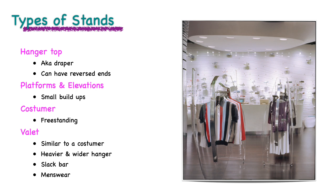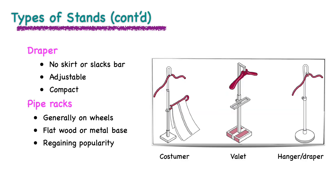The costumer and valets are great for displaying in specialty stores, boutiques, or in areas with limited space. The draper is another type of hanger; however, it does not have a skirt or a slacks bar. This adjustable fixture is compact, making it meant for counters or to create a buildup.